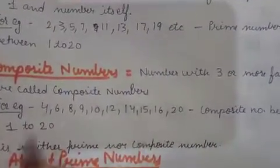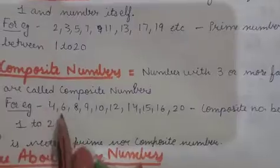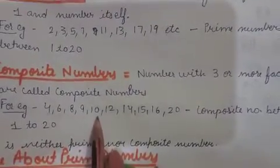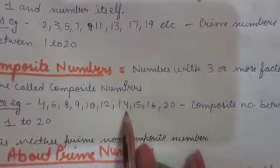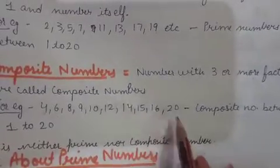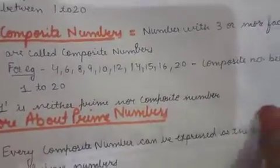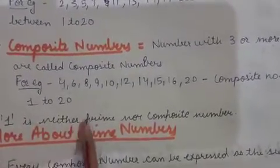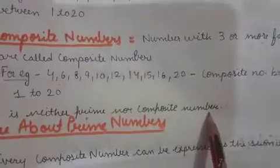The composite numbers between 1 to 20 are 4, 6, 8, 9, 10, 12, 14, 15, 16, and 20. One only appears in its own table, so one is neither prime nor composite.